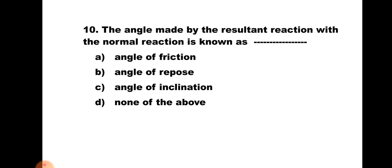Question number ten: The angle made by the resultant reaction with the normal reaction is known as — a) Angle of friction, b) Angle of force, c) Angle of inclination, d) None of the above. The angle made by the resultant reaction with the normal reaction is known as angle of friction. Hence the correct answer is a) Angle of friction.